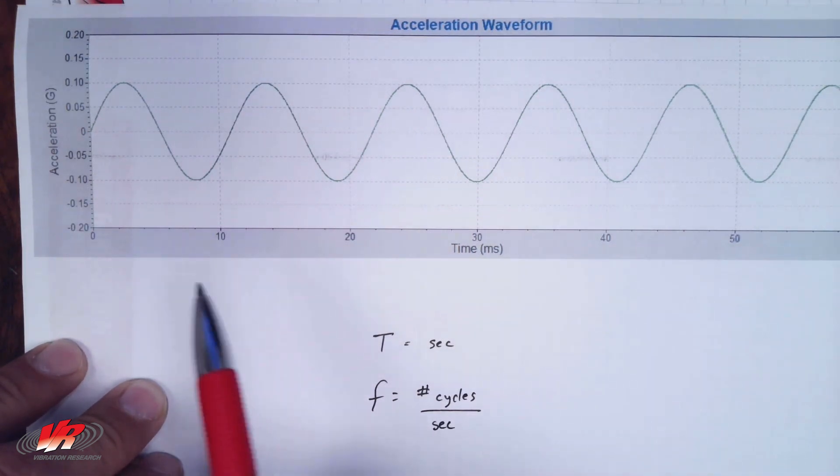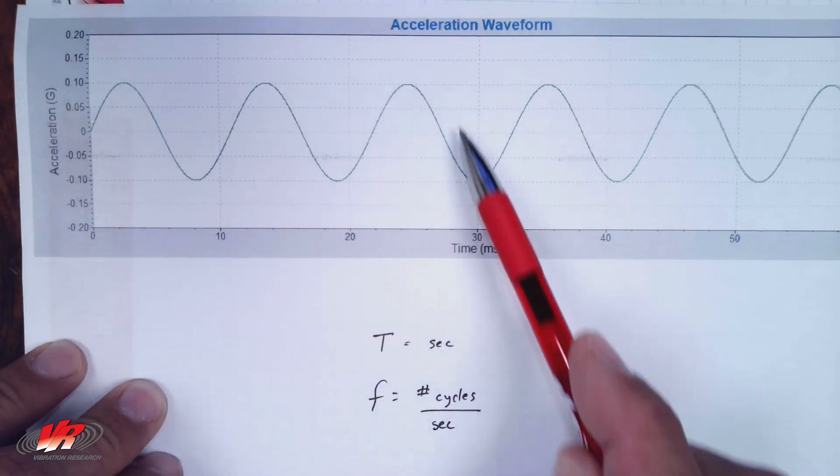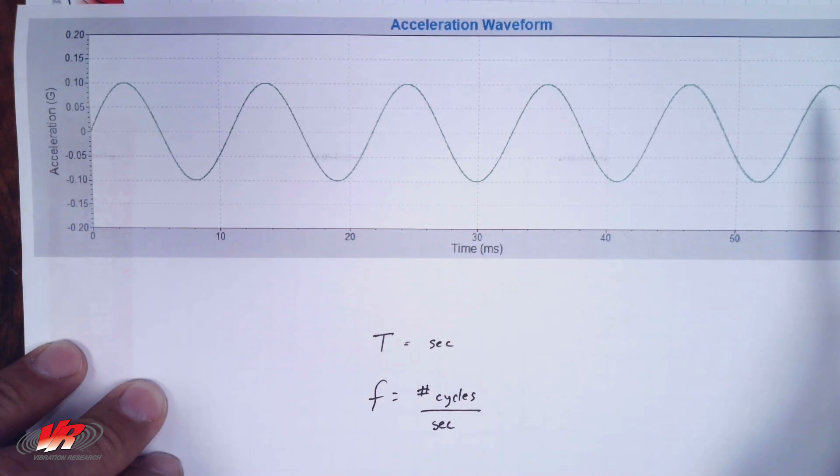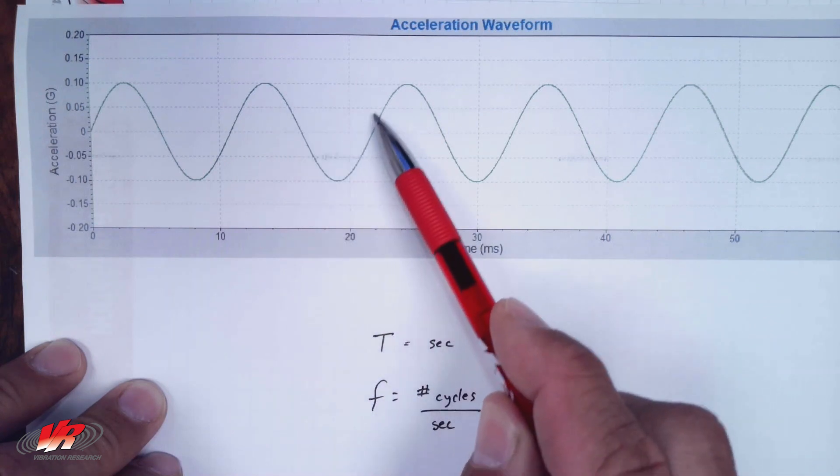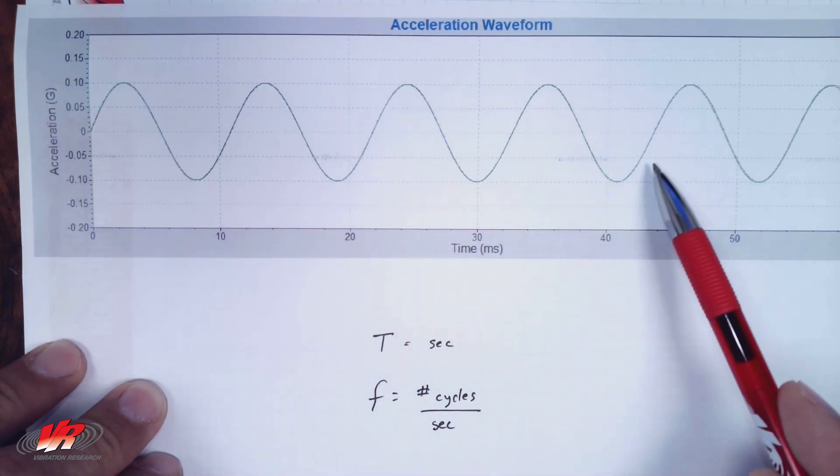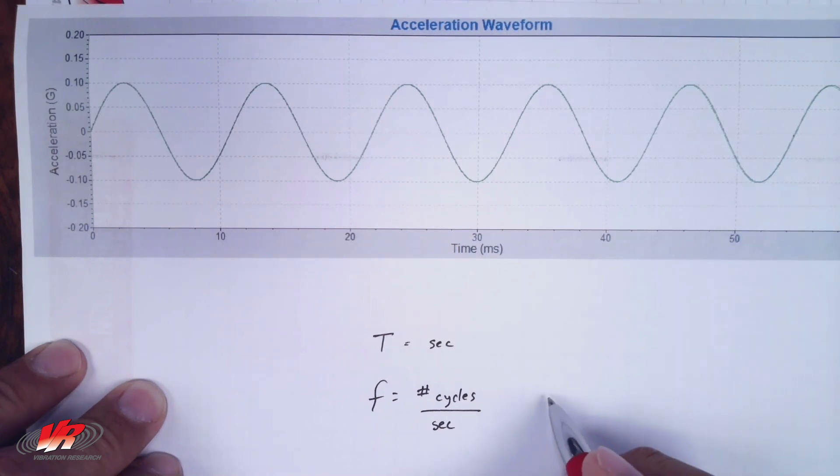So on this picture that I have in front of us, suppose that all of these cycles happened in one second. Ignore my units a moment. Imagine that we had one cycle, two cycles, three cycles, four, five cycles. Then that frequency would be five cycles in one second, or we call that unit 5 Hertz.